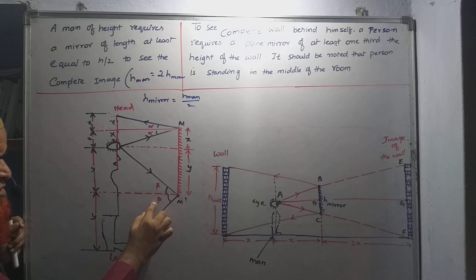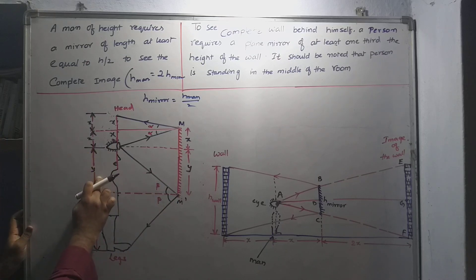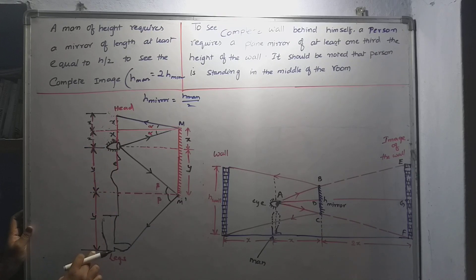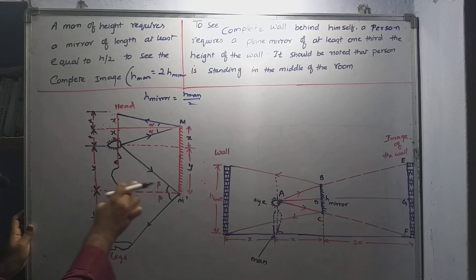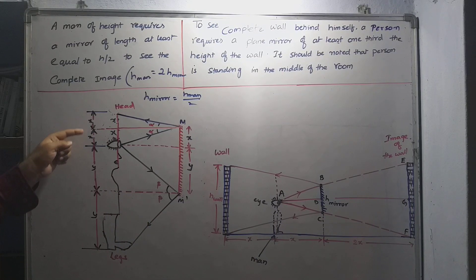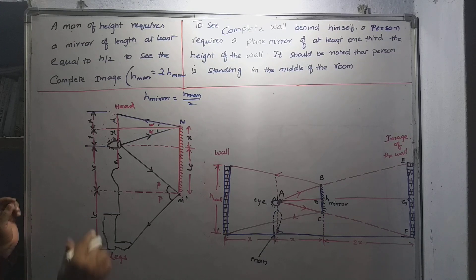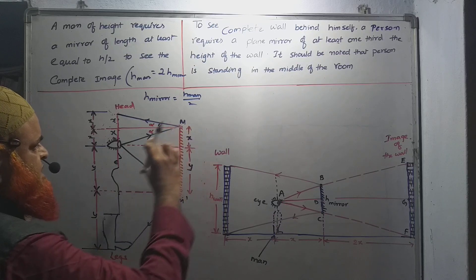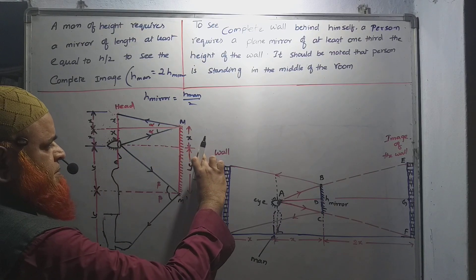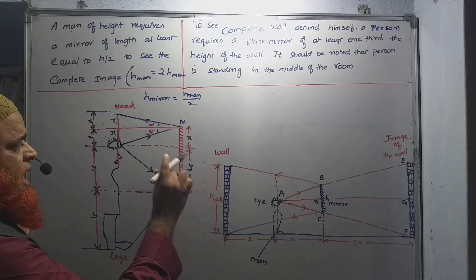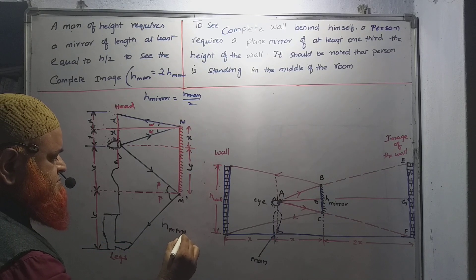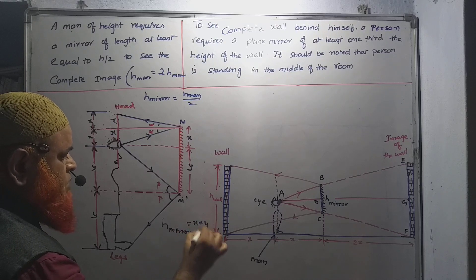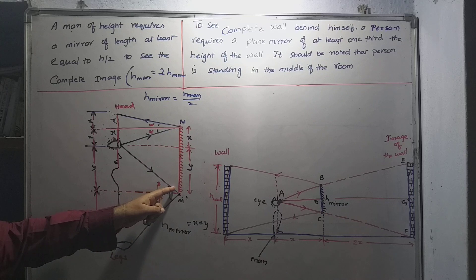For the lower ray, this angle is beta and this is also beta. So from I to this point it is Y, and from here to the legs it is also Y — sides opposite to equal angles are equal. So this is X and X, this is Y and Y. The height of the mirror is therefore X plus Y.